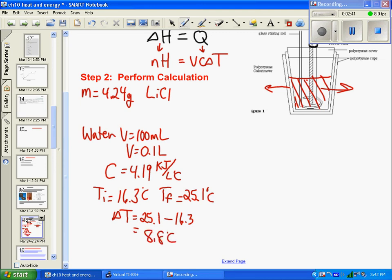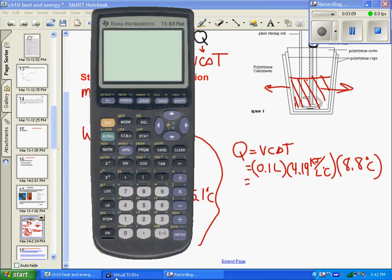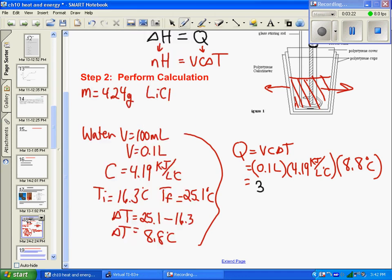I will use this information to calculate Q, which is VcΔT. That's 0.1 liters times 4.19 kilojoules per liter degree Celsius for water, times the temperature change of 8.8 degrees Celsius. Calculating: 0.1 times 4.19 times 8.8 gives us 3.69 kilojoules. That's how much heat was given to the water.